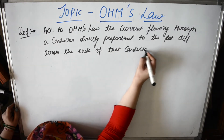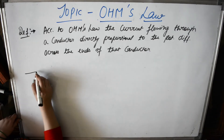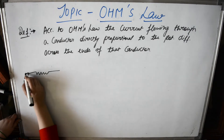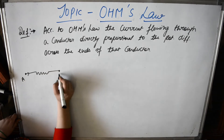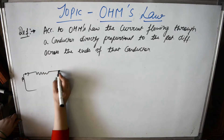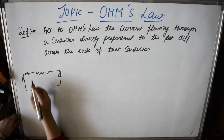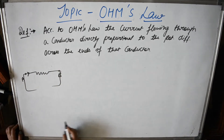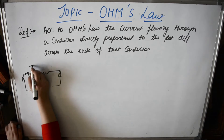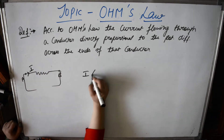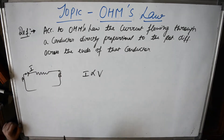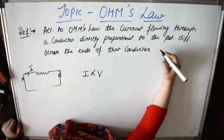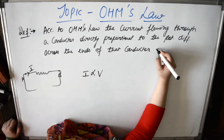Let us consider a conductor. I have considered this conductor — this is point A and this is point B. I have connected it with some battery. So the current flow will depend upon the potential difference. This is a very important factor which we have to learn and remember.